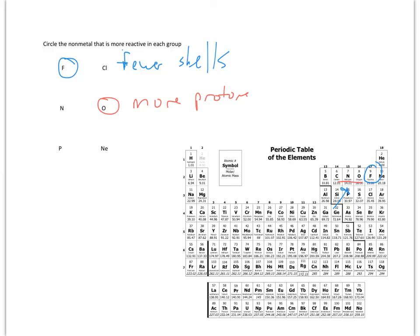And lastly, between phosphorus and neon. Phosphorus is here, neon's here. But neon's a noble gas, so it's sort of disqualified. So phosphorus wins as a result. And that is how you determine which element is more reactive on the periodic table.